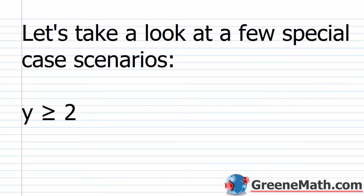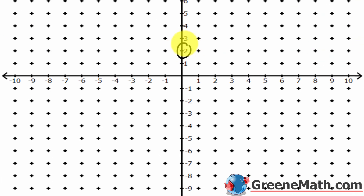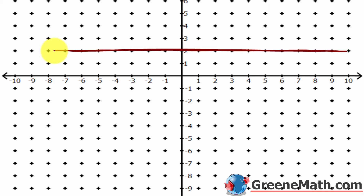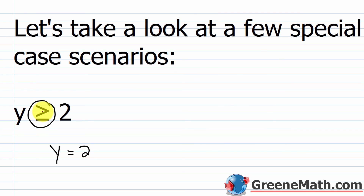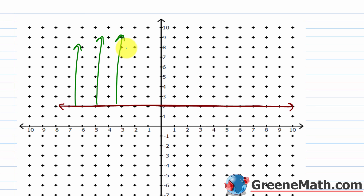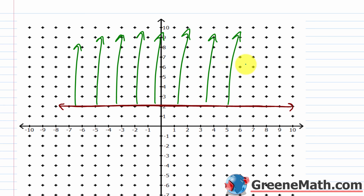Let's look at special case scenarios. For y is greater than or equal to 2: we know y equals 2 is a horizontal line. It's a non-strict inequality, so the boundary line will be solid. Find 2 on the y-axis and draw a horizontal line — that's the boundary line. Because y is greater than or equal to 2, shade above this line. No matter what the x-value is, it doesn't affect the inequality, since only the y-value matters.